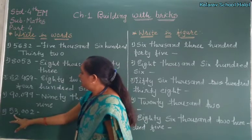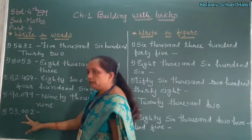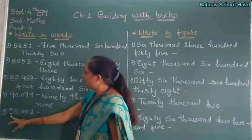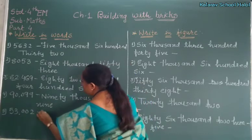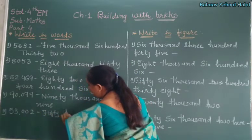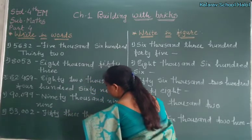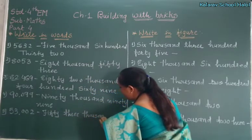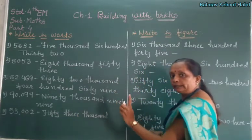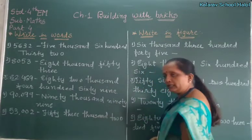See here — 53,000, then 100, tens not here, direct 2. So where there is nothing, it will not be written. So, 53,002 — only, 100's not here, 10's not here, direct 2. Understand?